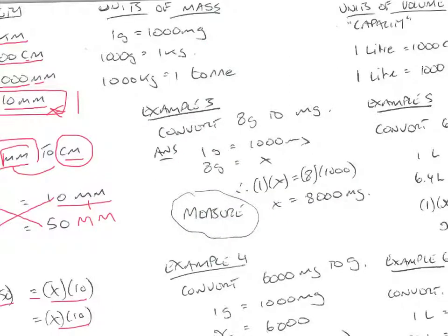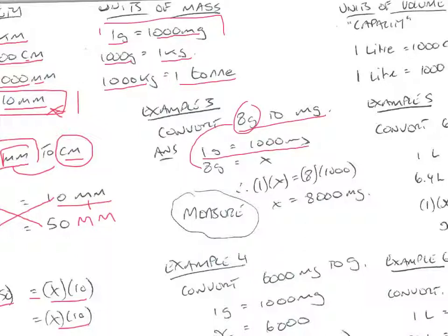Let's look at the units of mass. 1 gram equals 1000 milligrams, 1000 grams is 1 kilogram, and 1000 kilograms is 1 tonne. To convert 8 grams to milligrams: 1 gram equals 1000 milligrams, so 8 grams — keeping grams underneath each other — equals x milligrams. Cross-multiplying, x times 1 equals 8 times 1000, giving x equals 8000 milligrams. So 8 grams is the same as 8000 milligrams.